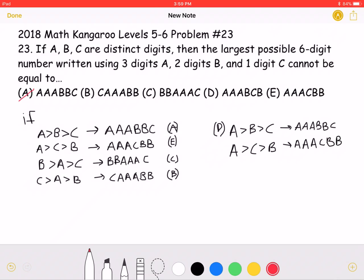If A is greater than C, which is greater than B, then our number would be AAACBB, which is answer choice E. This means that answer choice E is also incorrect.